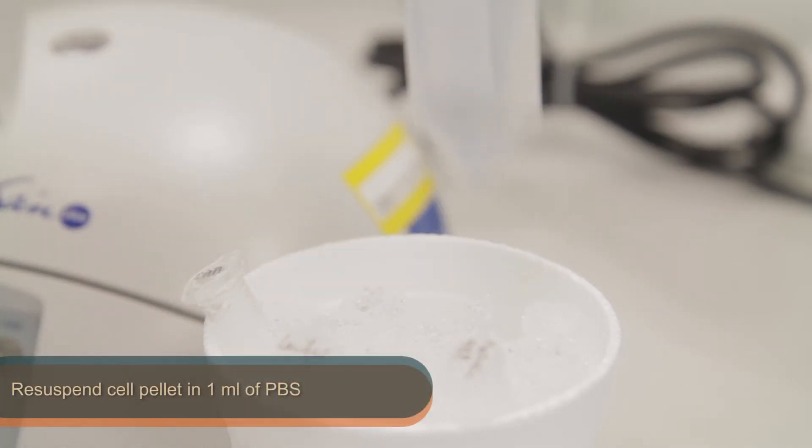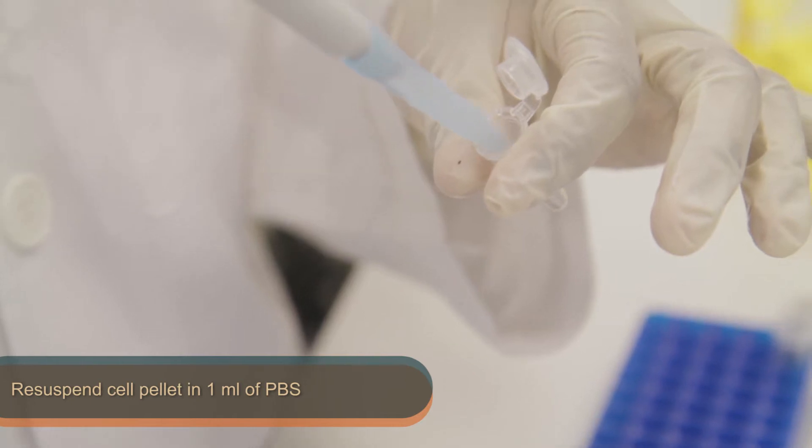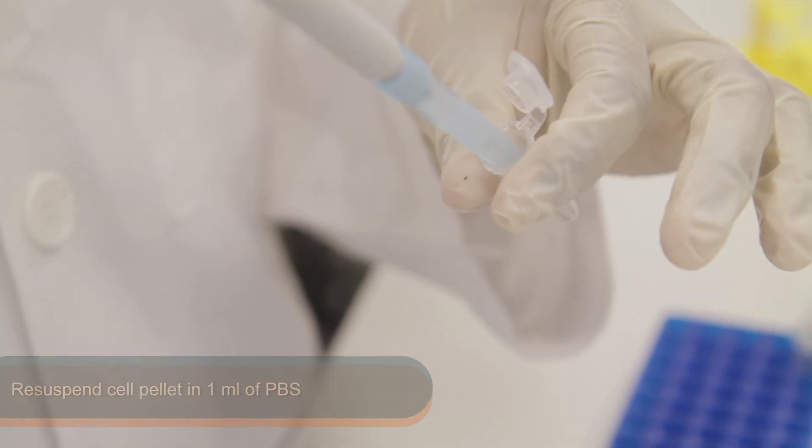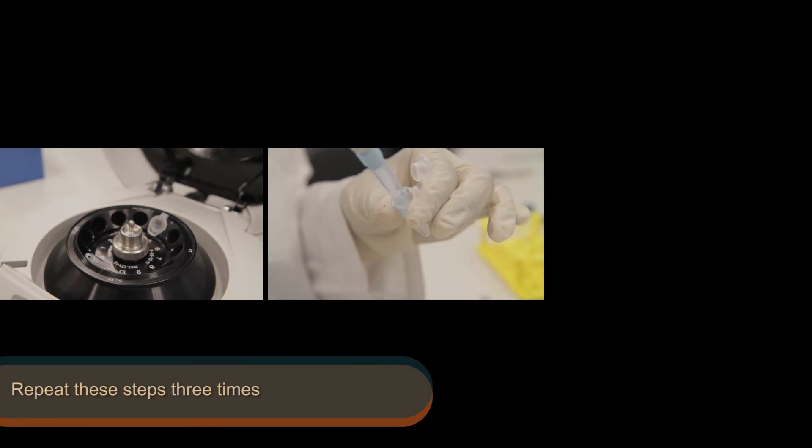Next, re-suspend the cell pellet in 1 ml of PBS. Repeat these steps 3 times.